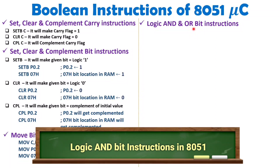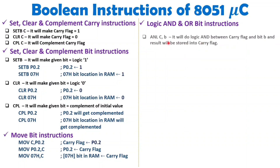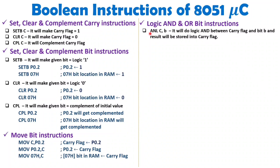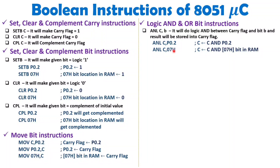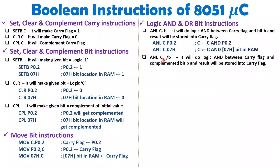Now I will explain logic AND and logic OR with respect to bits. ANL is the syntax, and this logical operation happens with respect to the carry bit only. ANL C, bit performs a logic AND of the carry bit and the specified bit, and the answer is stored inside carry. For example, ANL C, P0.2 performs logic AND of C and port pin P0.2, storing the answer in C. ANL C, 07h logic ANDs that RAM bit with the carry flag and stores the answer in carry.